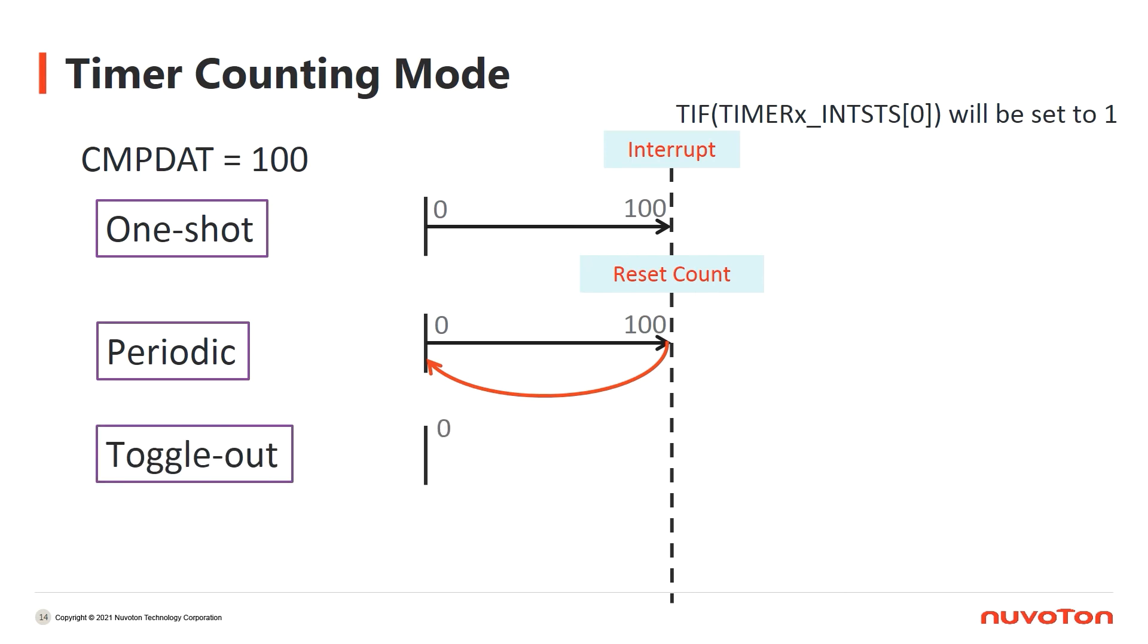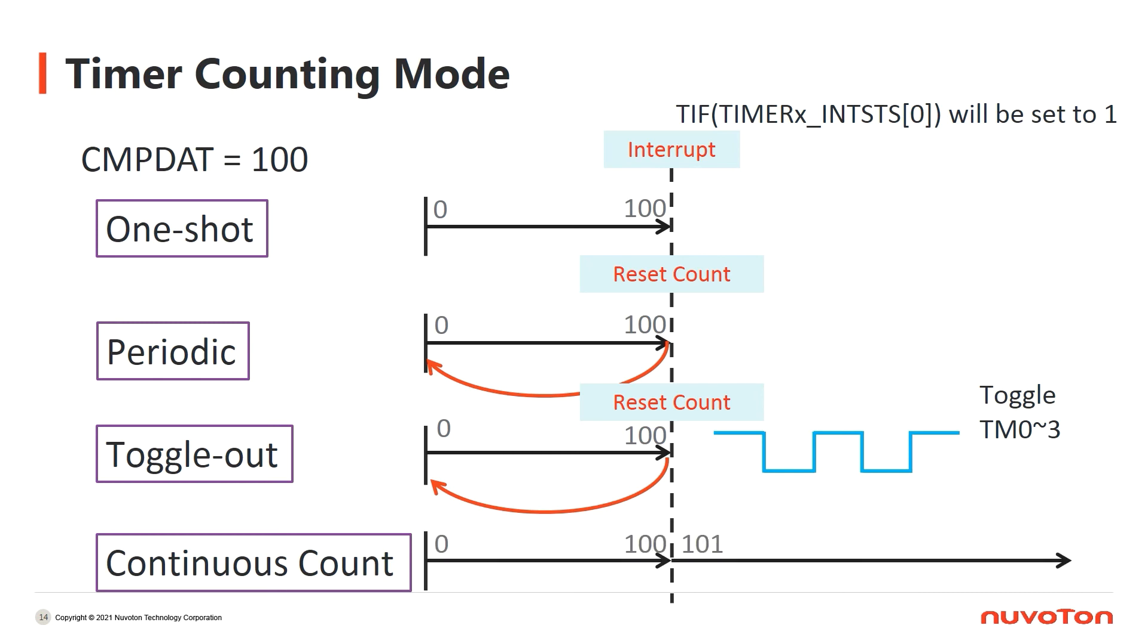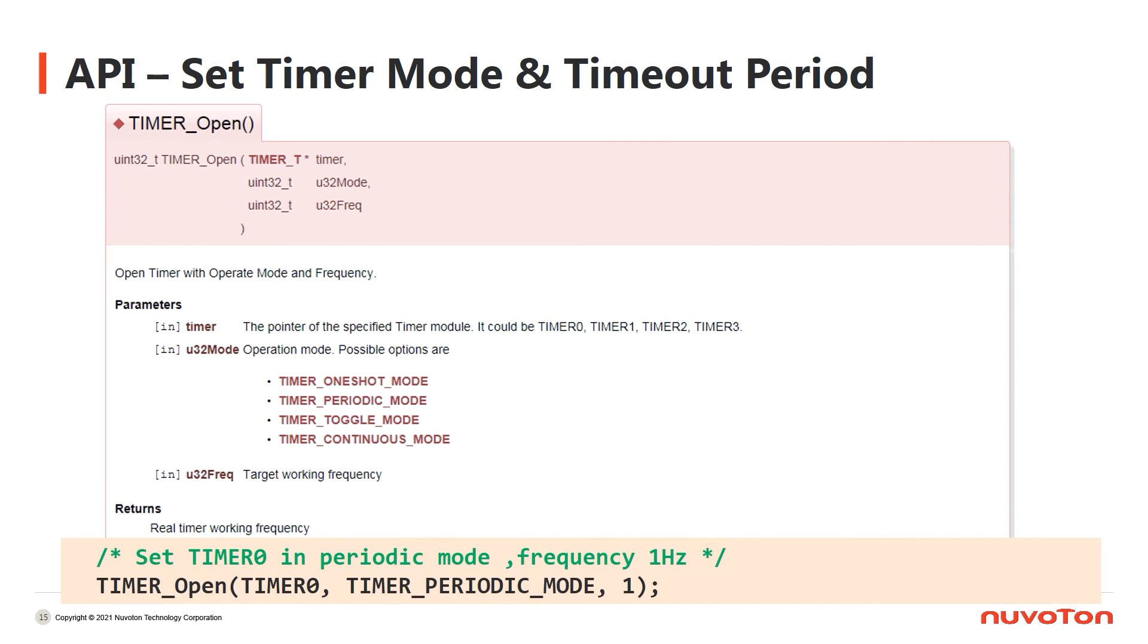For toggle out mode, it is similar with periodic mode. However, when the counter value reaches 100, it will toggle the signal of pin TM0 to TM3. It will also reset the counter and repeat the counting. Therefore, for toggle out mode, it will output a toggled waveform through pin TM0 to TM3. For continuous count mode, when the value reaches 100, it will trigger an interrupt, but it won't reset the counter. The counter will keep counting until it is overflowed. In this mode, you can change the value of comparator dynamically without stopping the timer. These are the counting modes we provide for timer function. You can choose what to use by your requirement.